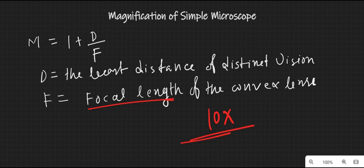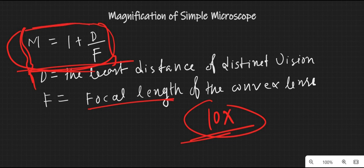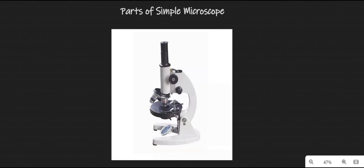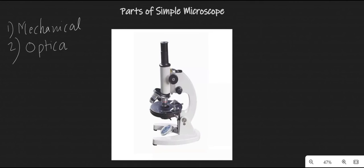This means that the object will appear 10 times larger when using a simple microscope at maximum magnification. Using this formula we can calculate the magnifying power of a simple microscope. Now we will discuss the parts of a simple microscope. Basically there are two categories: the first one is called the mechanical parts and the second one is the optical parts.